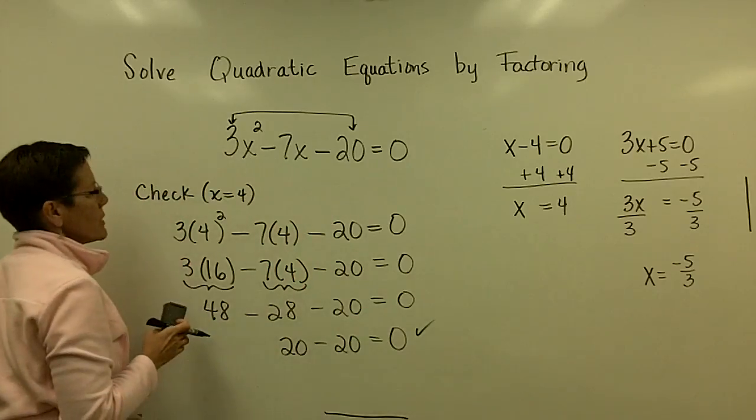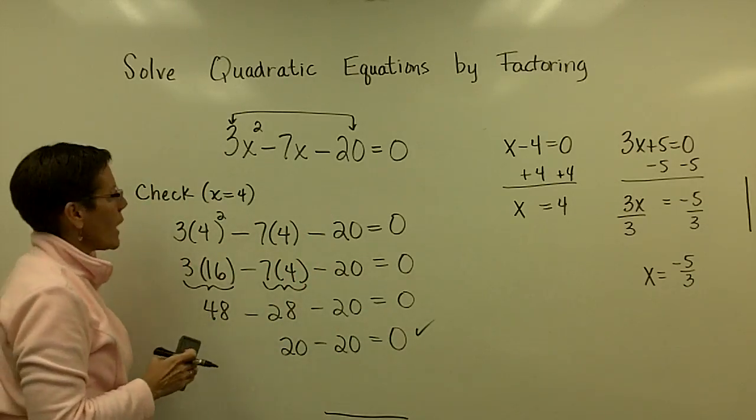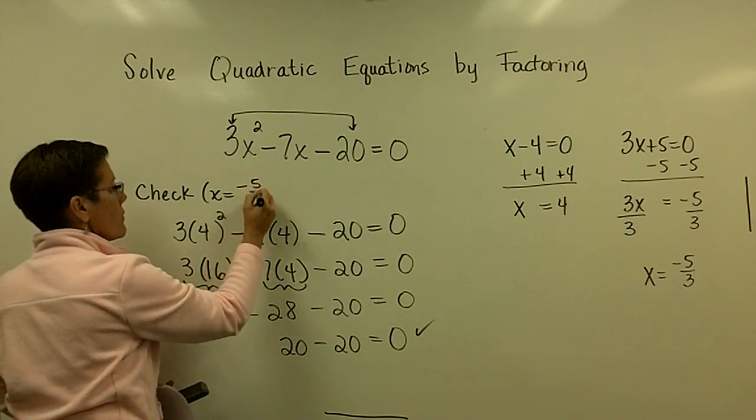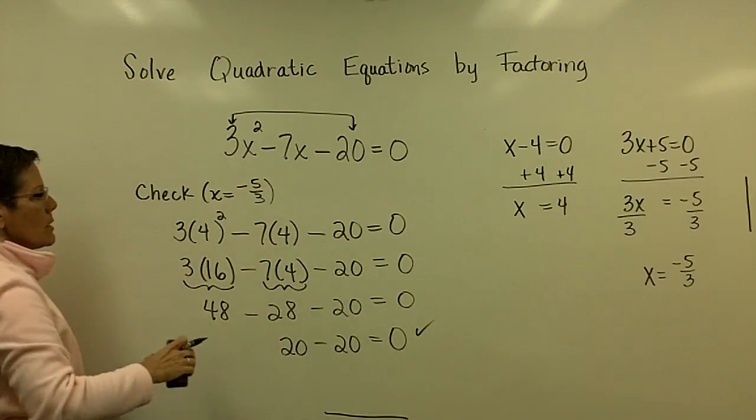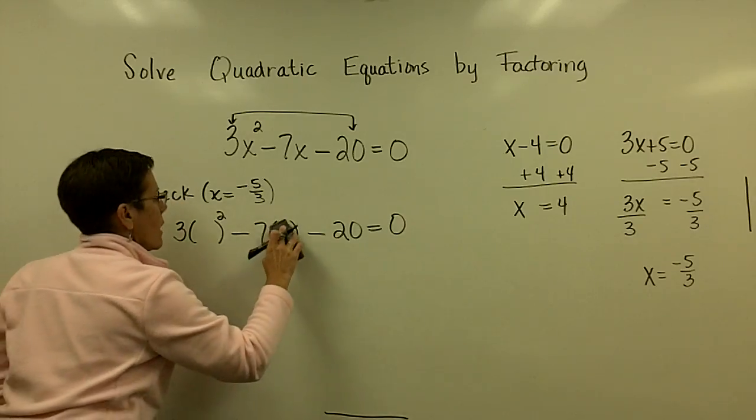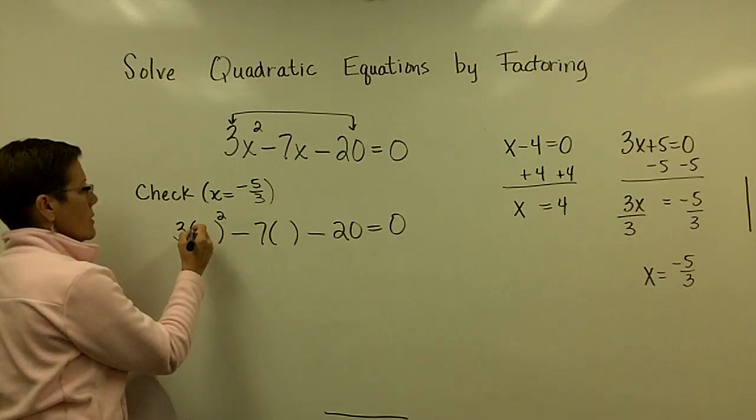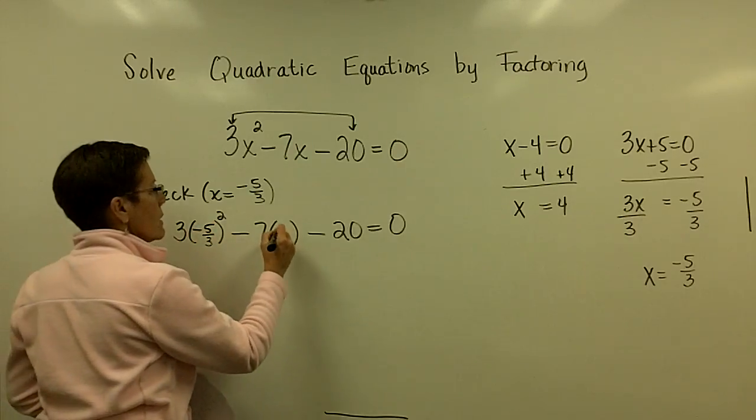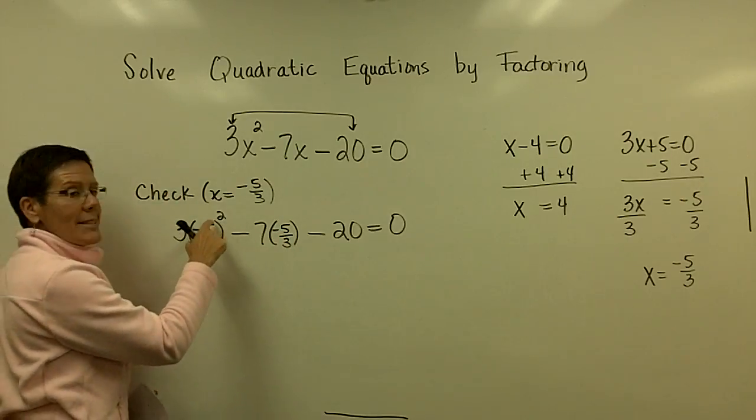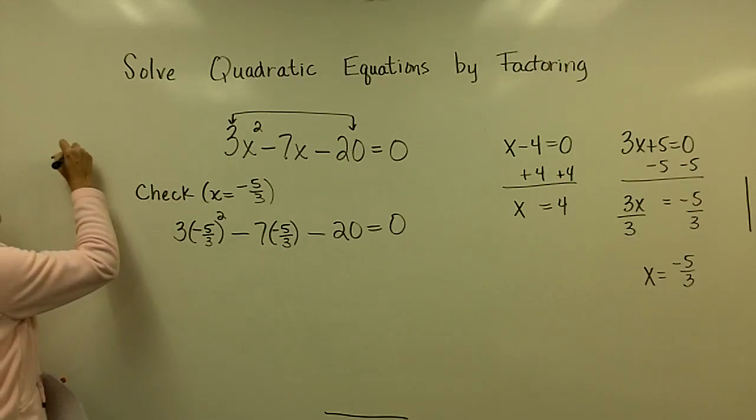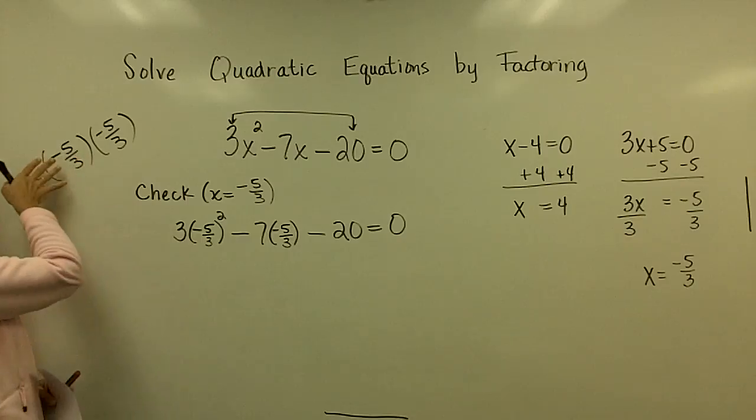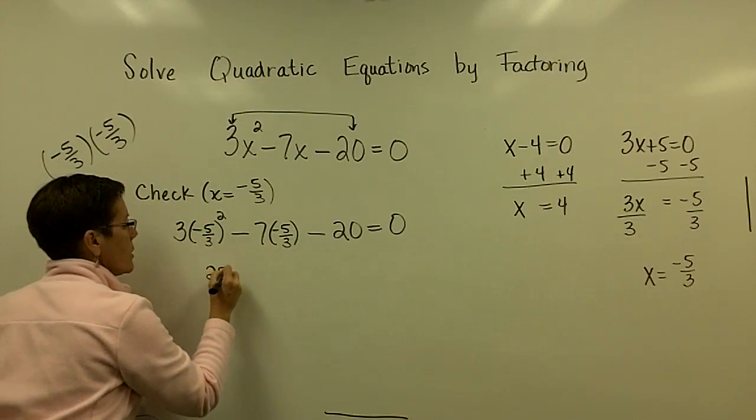Let's check that fraction of negative 5 thirds. I'm going to try this negative 5 thirds for x in the original problem. I'm going to go ahead and put negative 5 over 3 in here everywhere I see x. Be very careful, you've got to square this first. Negative 5 thirds times negative 5 thirds, you just multiply straight across, is positive 25 over 9.